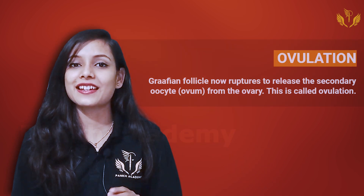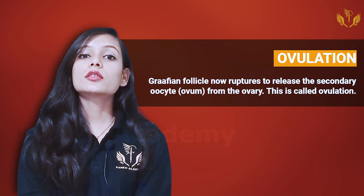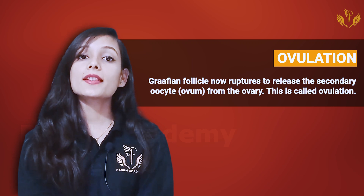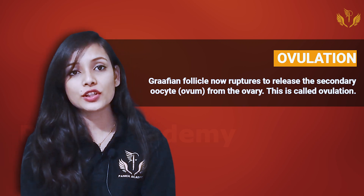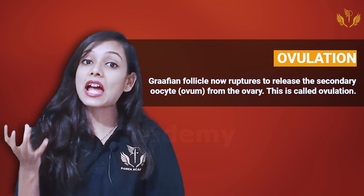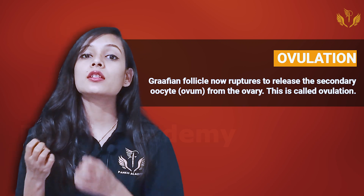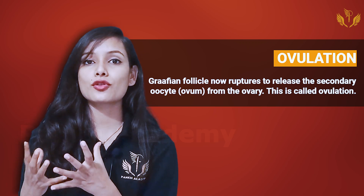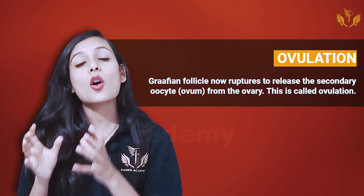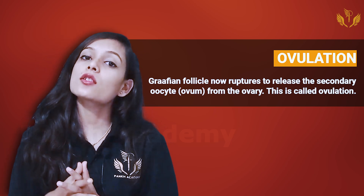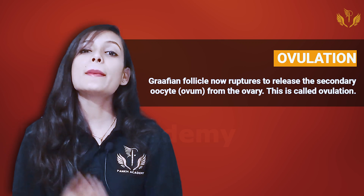Oogenesis is not really tough — it was very easy, even simpler than spermatogenesis. Now, the term ovulation: ovulation occurs when the Graafian follicle ruptures to release the secondary oocyte from the ovary. That is known as ovulation.